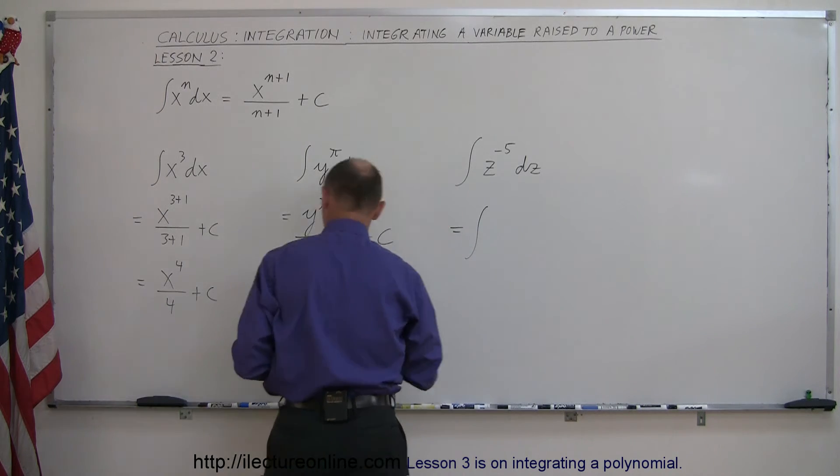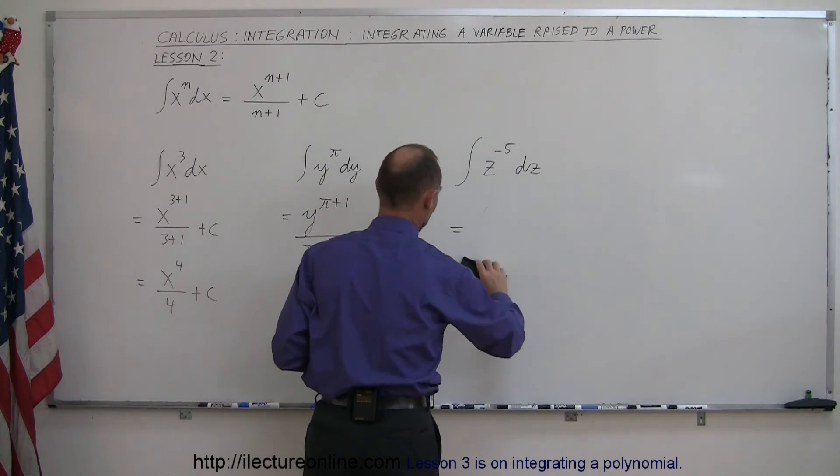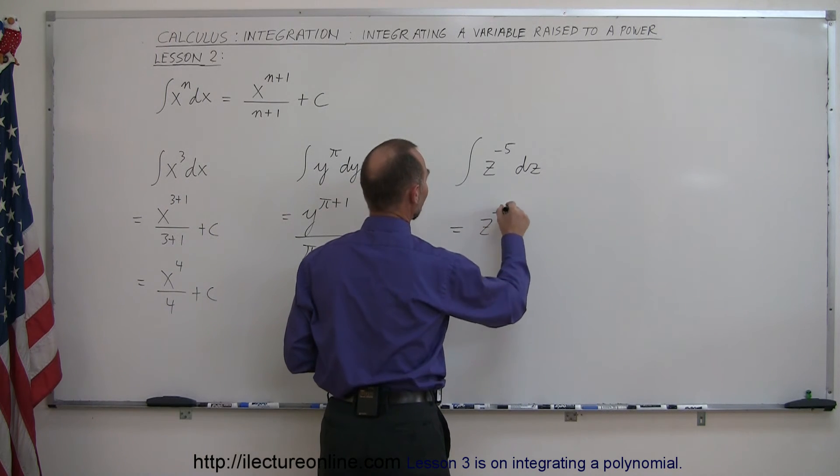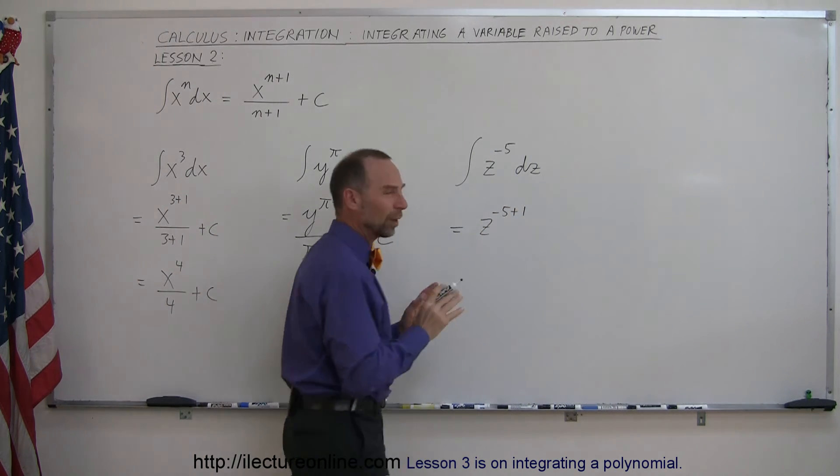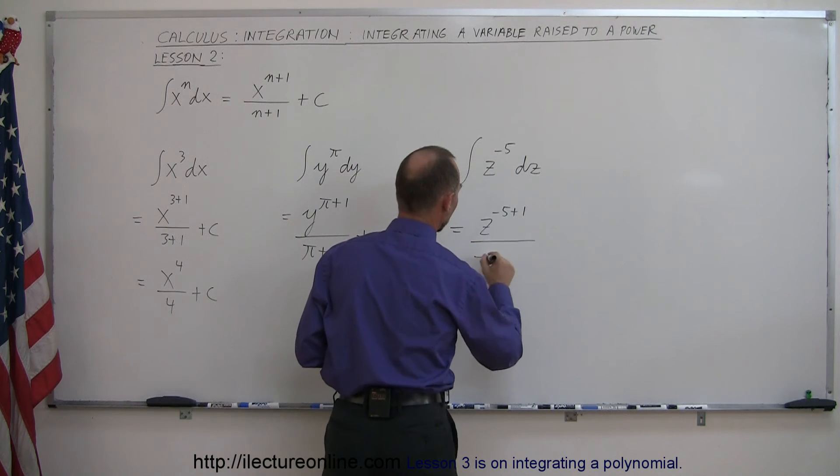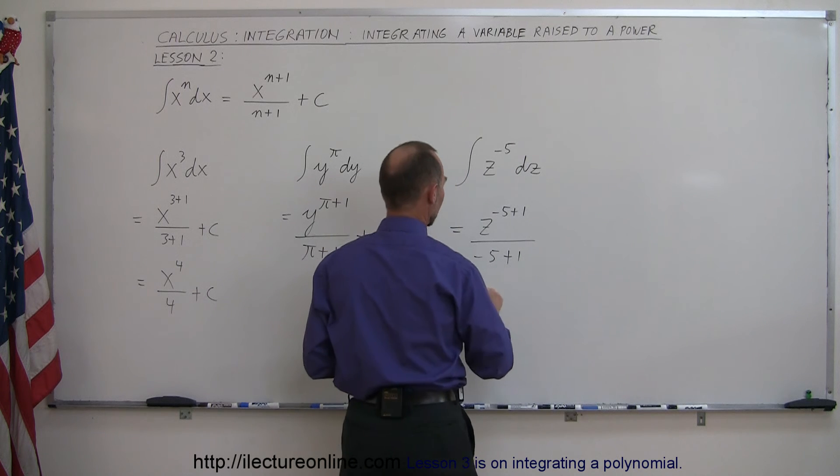To illustrate, the integral sign drops off. And then we get z to the minus five plus one. I'll just go ahead and put the intermediate step here so you can see how it's done. Divided by minus five plus one, and don't forget the constant of integration, plus c.